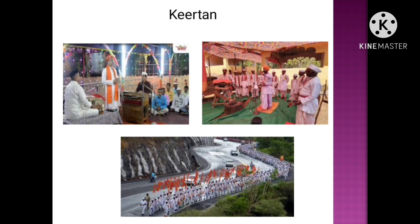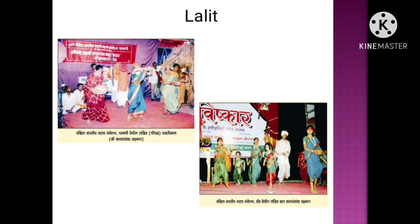Haridasi kirtan has two parts: purvarang and uttarang. Purvarang comprises naman and nirupanacha abhang, and uttarang comprises narration of the main theme. Kirtan was used as a medium for creating social awareness by Satyashodak Samaj. The Topante Patwardhan of Vidarbha, Maharashtra, started the tradition of Rastriya kirtan, which plays emphasis on creating awareness by narrating the life stories of great leaders of the independence movement. Santa Tukdoji Maharaj and Govind Bua Afle performed Rastriya kirtan.